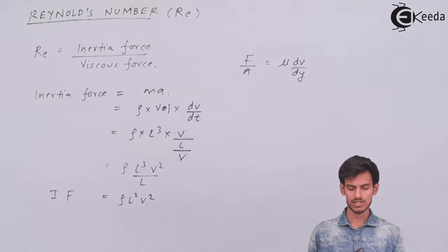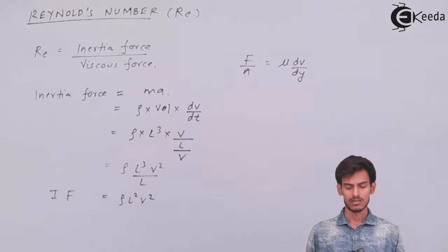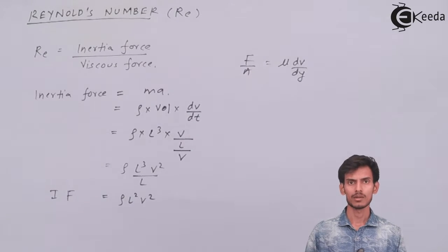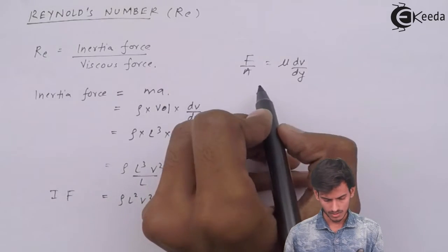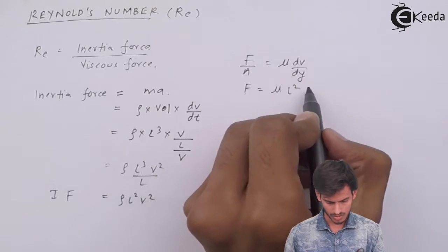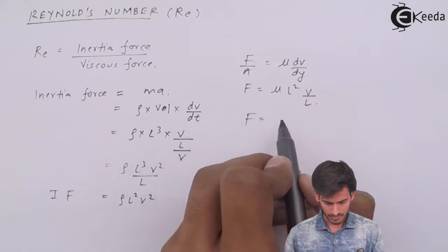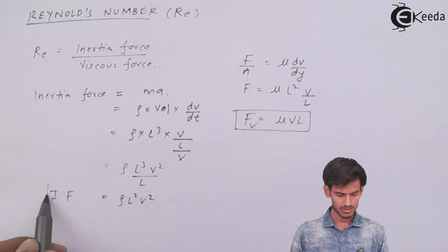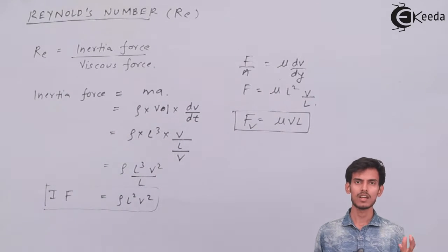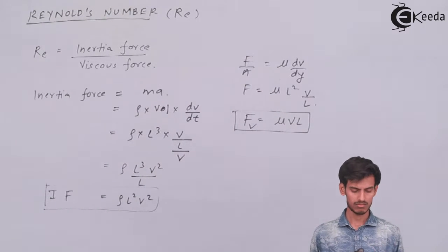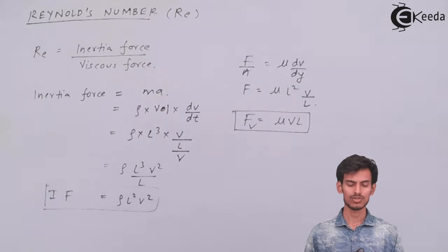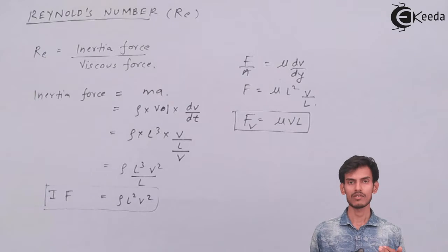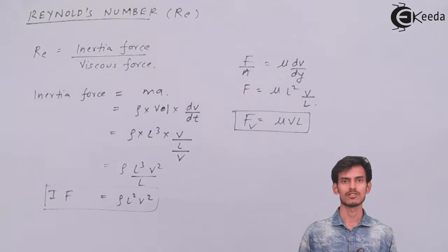This we've written just now here is nothing but Newton's law of viscosity. We've derived equations for viscous force and inertia force. Once you divide both values you will get the value of Reynolds number.